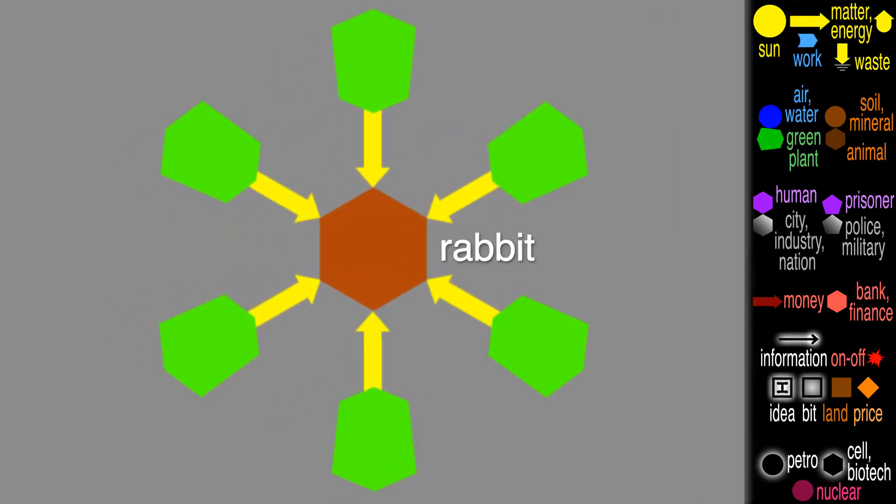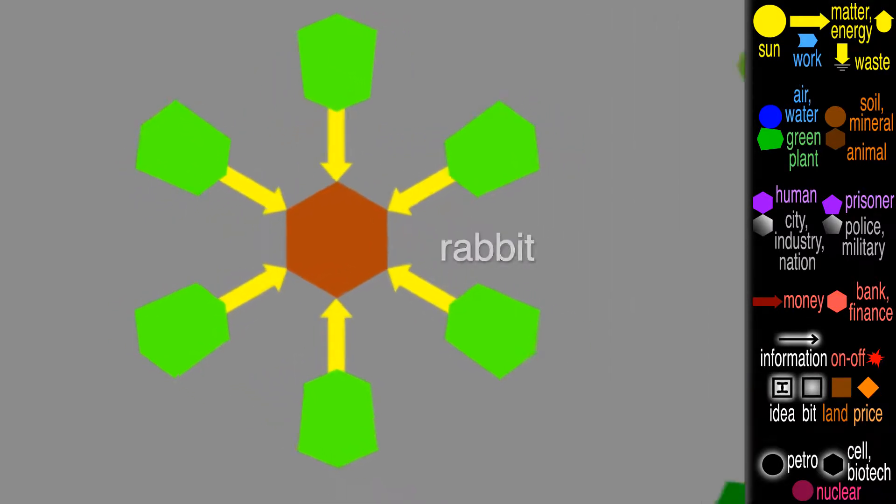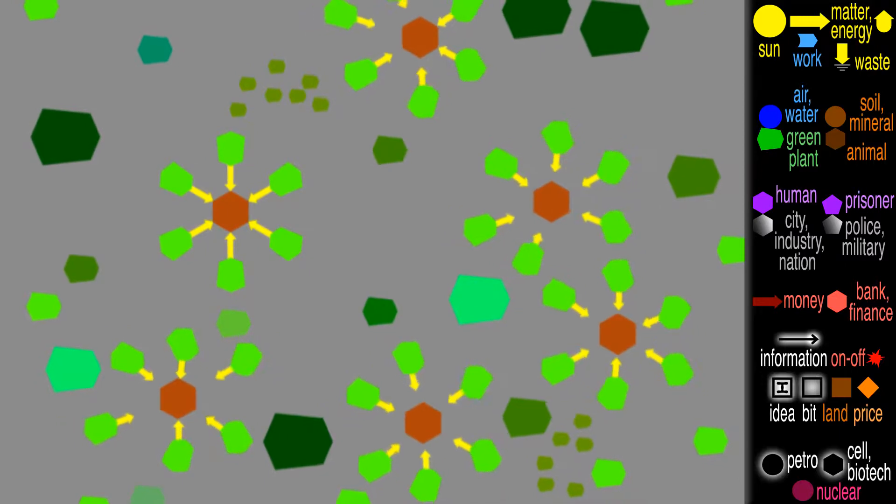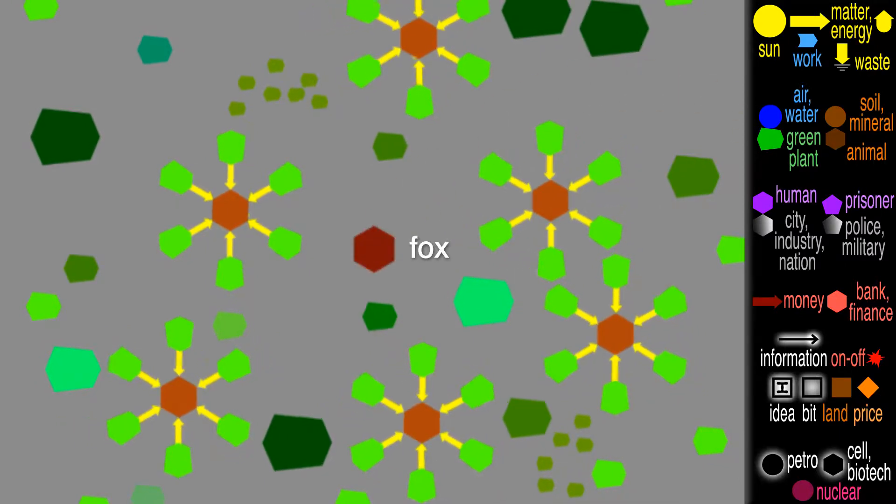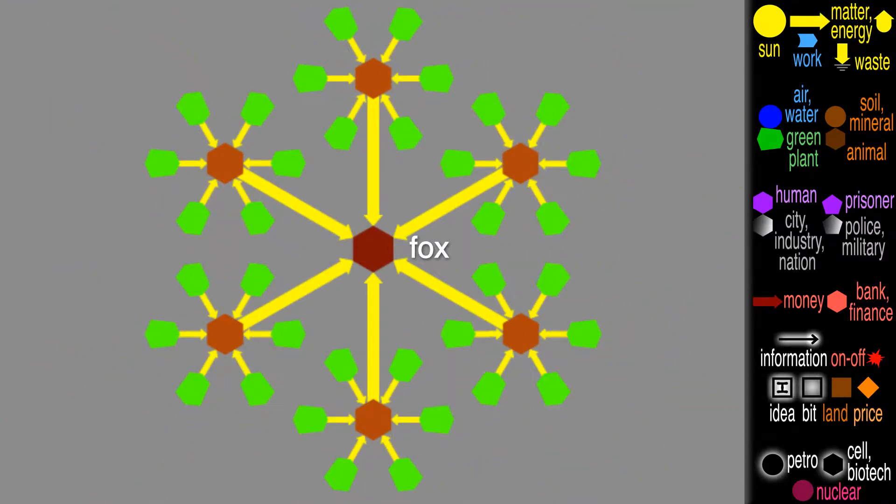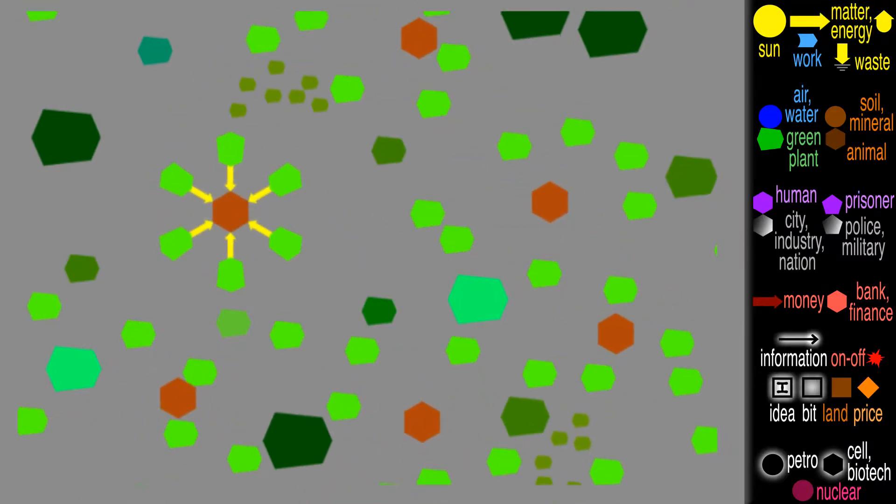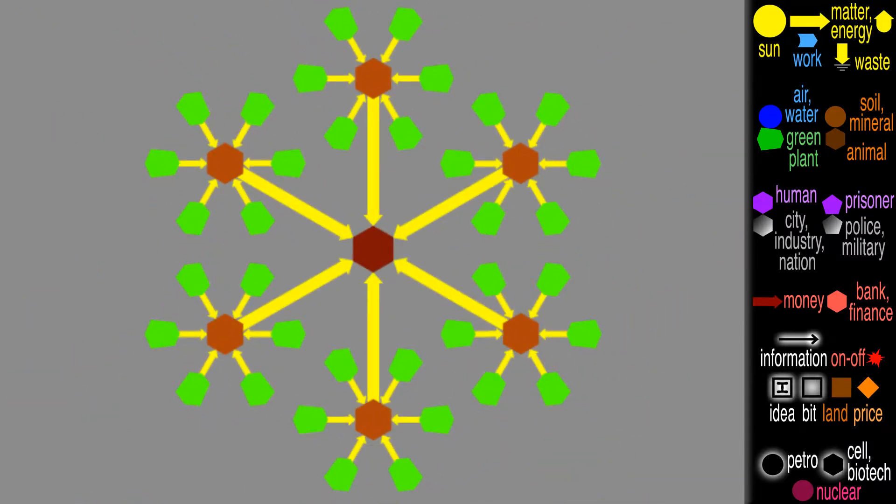This would be a rabbit eating plants. Out in the ecosystem, where all the rabbits were doing the same, a fox would eat the rabbits. We can go from an ecosystem to an abstract picture and back again.